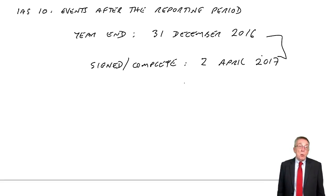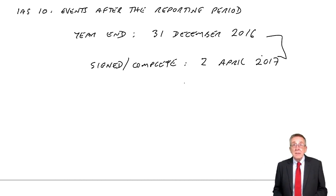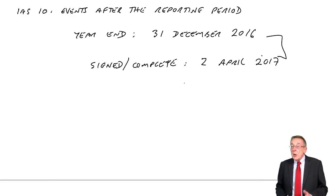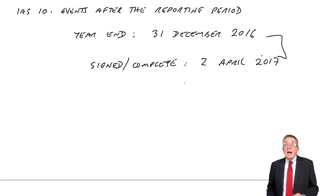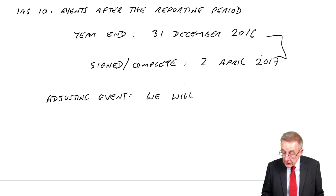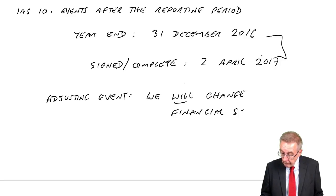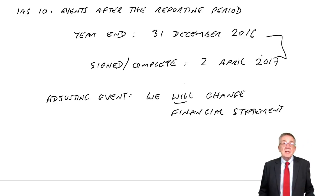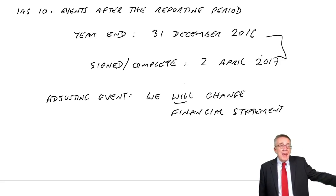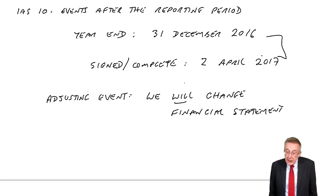If something happens between those two dates — perhaps in January you find a big mistake — the question is: are we going to change the financial statements or aren't we? We give them names. If it's what we call an adjusting event, we will change the financial statements. For example, if in January I discovered there was a mistake of £10,000 in the double entry — a mistake made last November — well, of course I'll change the accounts. It's an adjusting event.